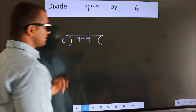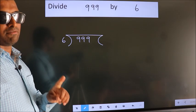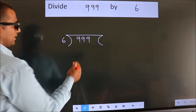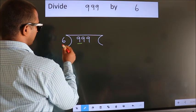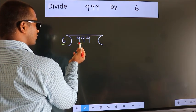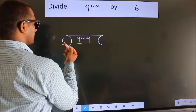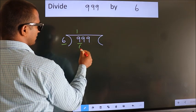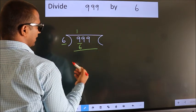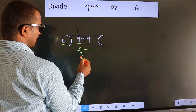This is your step 1. Next, here we have 9, here 6. A number close to 9 in 6 table is 6 times 1 equals 6. Now, we should subtract. We get 3.